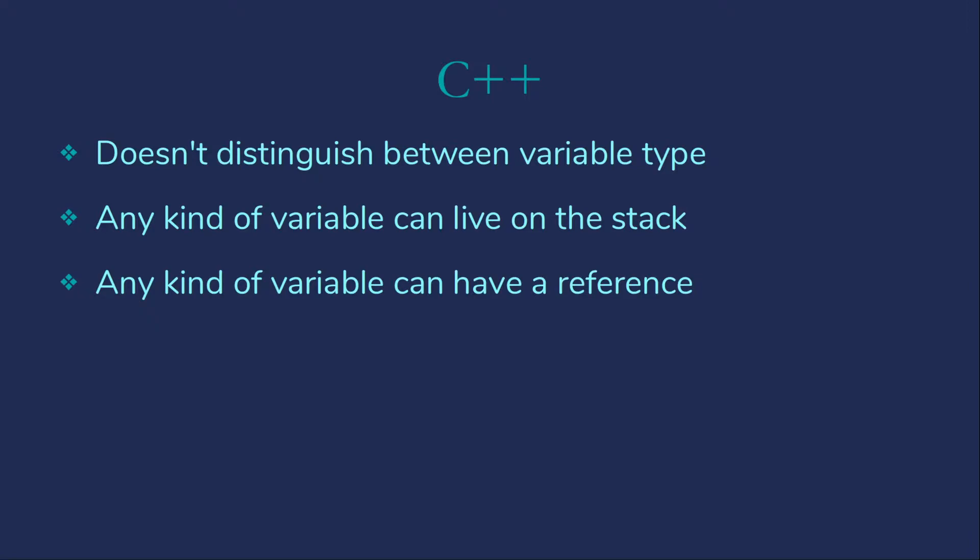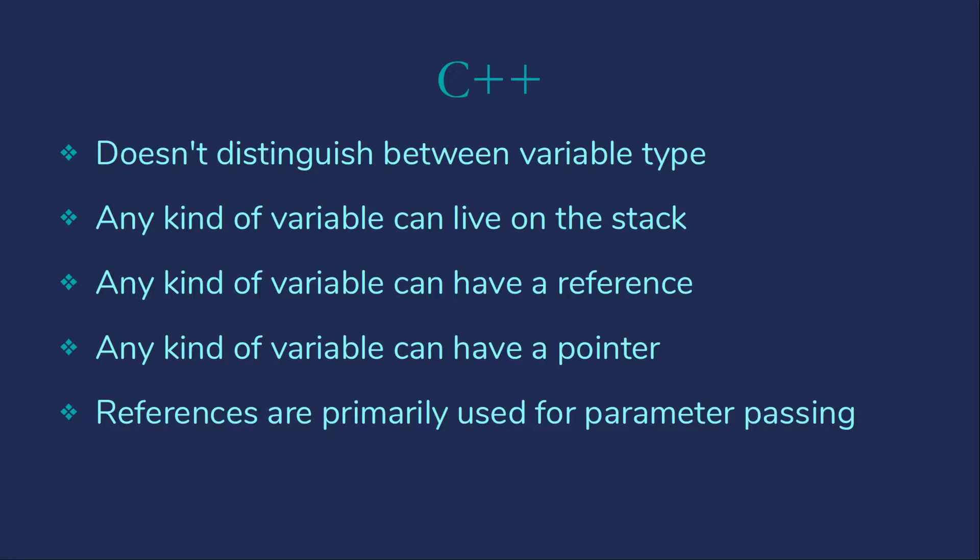Any kind of variable can have a reference. So I can pass an int by reference and end up with a reference to an int in that new function. Any kind of variable can also have a pointer, which is a variable type that Java doesn't have. References are not used very much in C++, though they're heavily used in Java. In C++, they're primarily going to be used for parameter passing that we've already talked about.